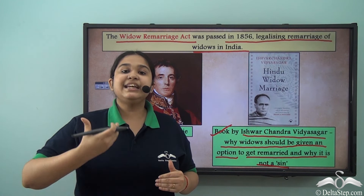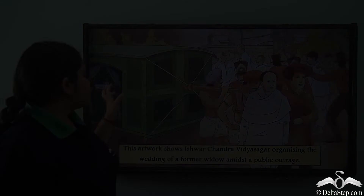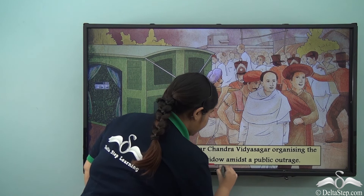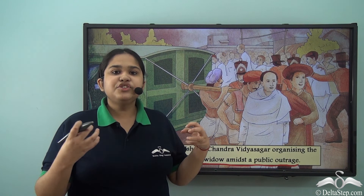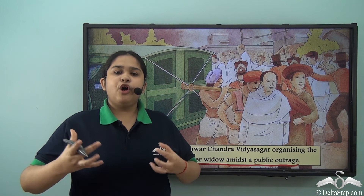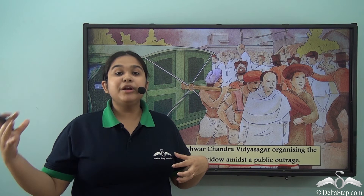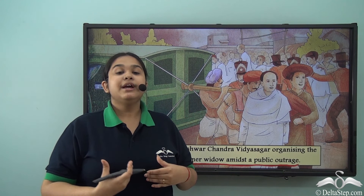In this picture, you can see how Ishwar Chandra Vidyasagar is organizing a widow remarriage — a palanquin, the marker of a Bengali wedding, is being carried amidst the outrage of the people. It is very important to note that people were not really receptive to these changes. There was a lot of outrage from the orthodox and traditional mindset, claiming the Vedas and Upanishads did not support these changes. But that wasn't the case, and that is why people like Ram Mohan Roy and Ishwar Chandra Vidyasagar were bringing change.